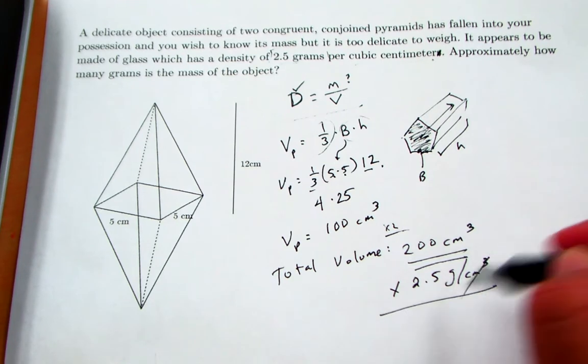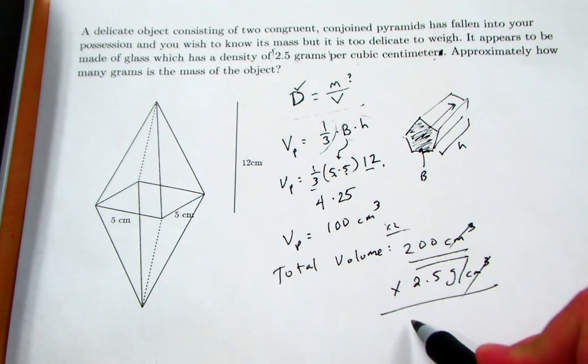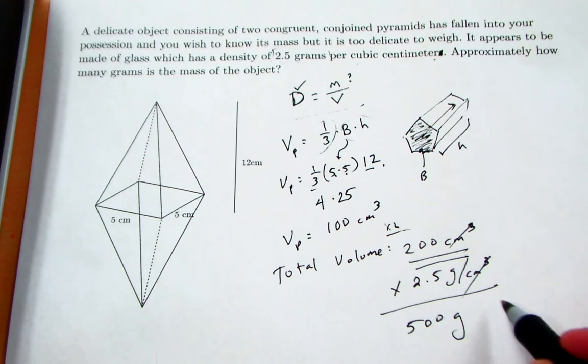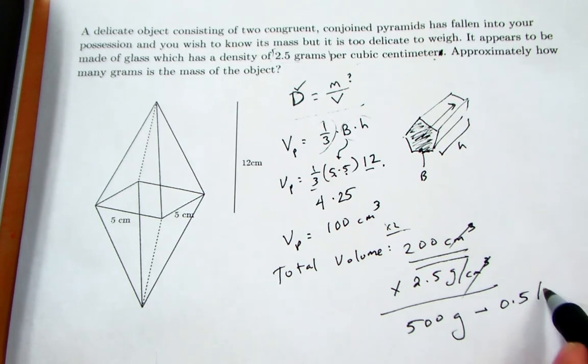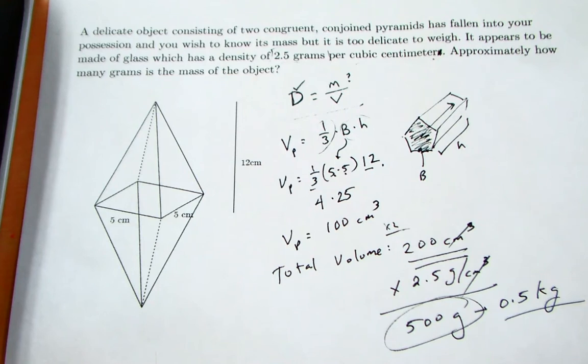So you simply multiply by two and a half grams per centimeters cubed, the density, and centimeters cubed cancel centimeters cubed. 200 times two and a half would be 500 grams, or if you prefer 0.5 kilograms, but that's probably the most straightforward answer.